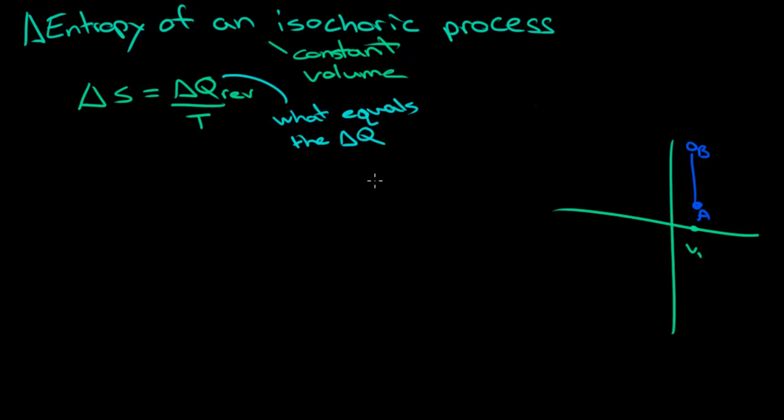Now, with an isochoric process, because none of the energy that we're adding gets turned to work, we know that delta Q equals the change in internal energy. And so, the energy equals 3 over 2 nRT.